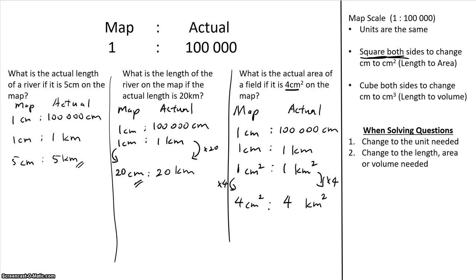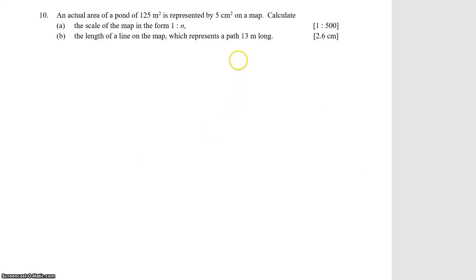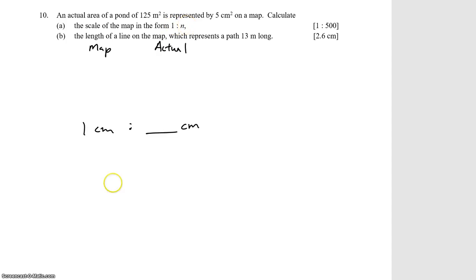Now let's look at a slightly different question. They give you the actual size of a pond and its size on the map, but they never give you the scale. The scale is 1 to N, and we need to find N. Remember, a map scale is always cm to cm, so we want 1 cm to something cm. The actual area is 125 m² and on the map it is 5 cm².